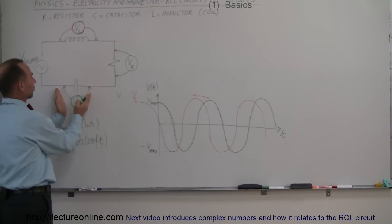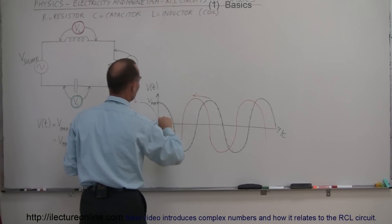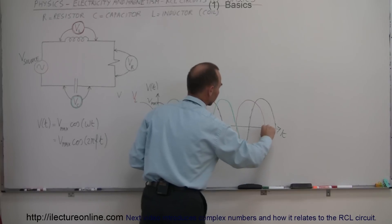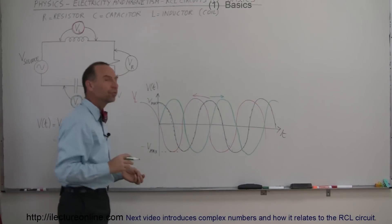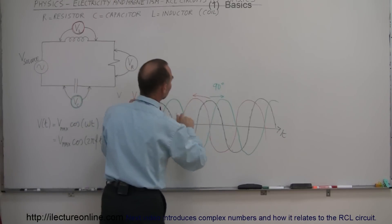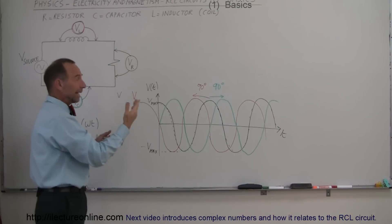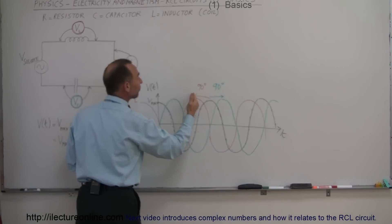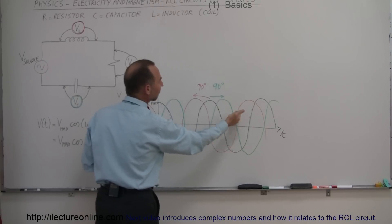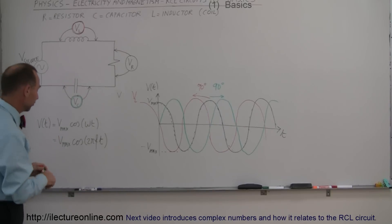Since the voltage drop across the capacitor happens after the voltage drop across the resistor, there's a phase shift to the right — that is the voltage drop across the capacitor, V sub C. The shift is exactly 90 degrees in either direction. This means the voltage across the inductor happens one quarter of a complete phase — since 90 degrees is one quarter of 360 degrees — before the voltage reaches its maximum across the resistor. The voltage across the capacitor reaches its maximum one quarter of a phase after the resistor. So the phase difference between the inductor and the capacitor is 180 degrees, or half a phase.